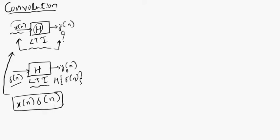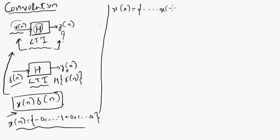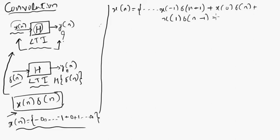Now we have written our input in terms of impulses. x[n] is the superposition of values ranging from minus infinity to plus infinity. We can rewrite this as: x[n] = x[-1]·δ(n+1) + x[0]·δ(n) + x[1]·δ(n-1) + ... and it goes till infinity.